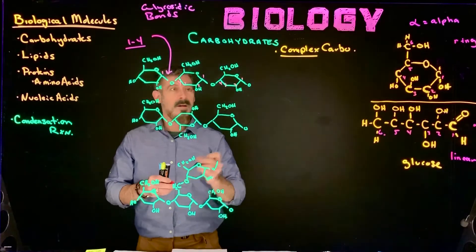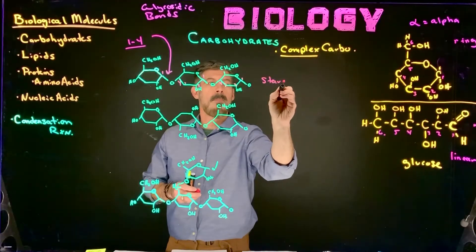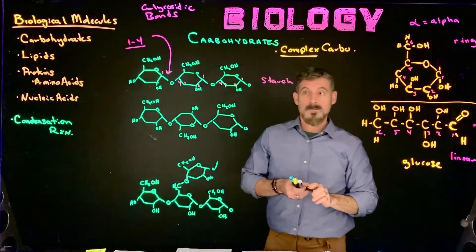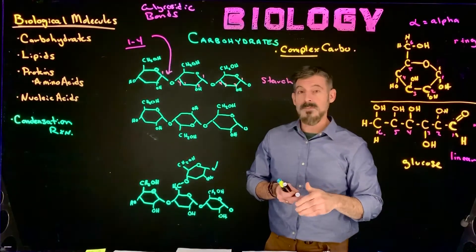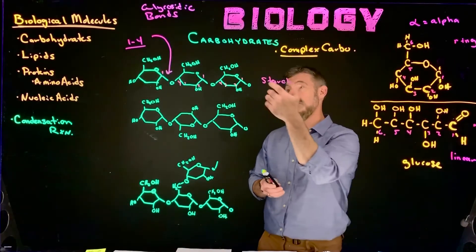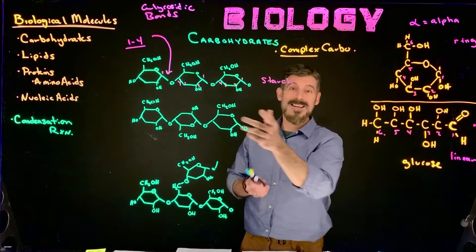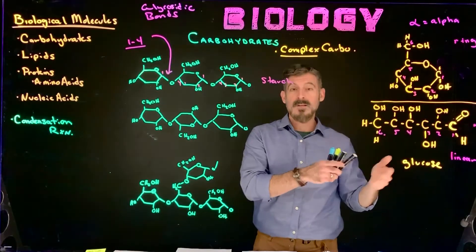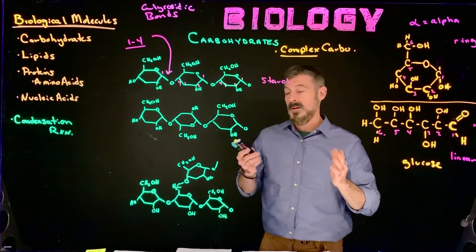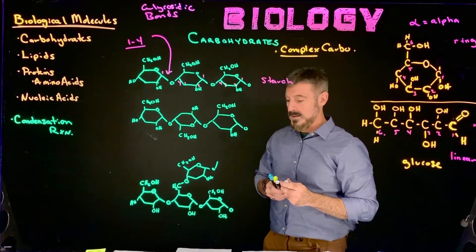The one we see up top here is the structure of starch. We can digest starch - we can break it down. Our body has an amylase enzyme that can bind to these molecules and break them down to get glucose, which we need in our cells, from the starch molecules. And that's all you really need to know to recognize and look at that structure.